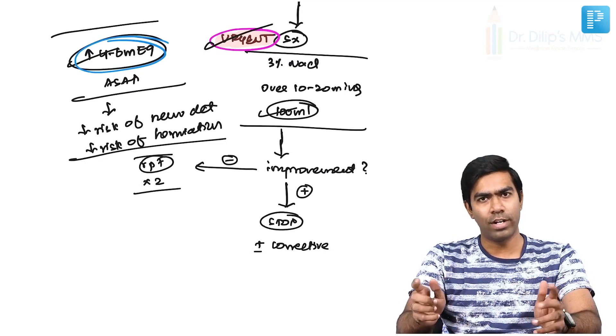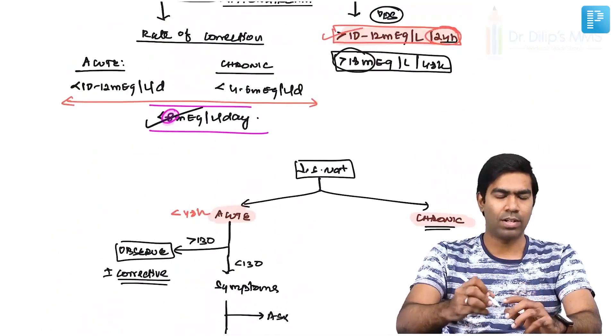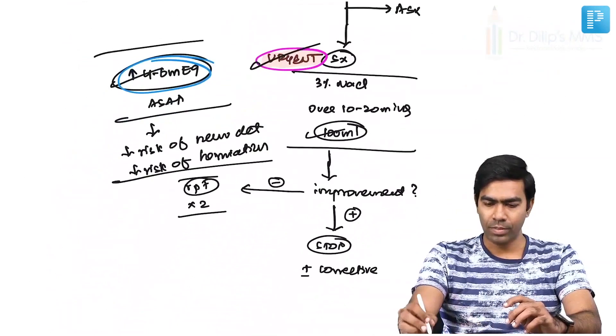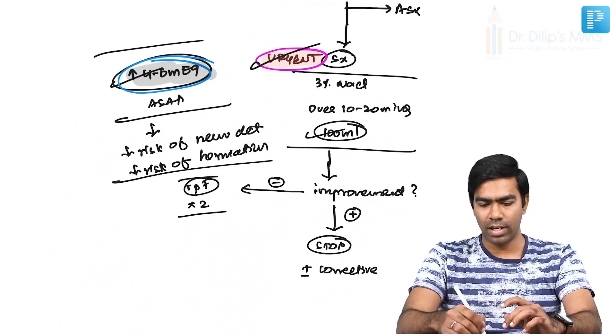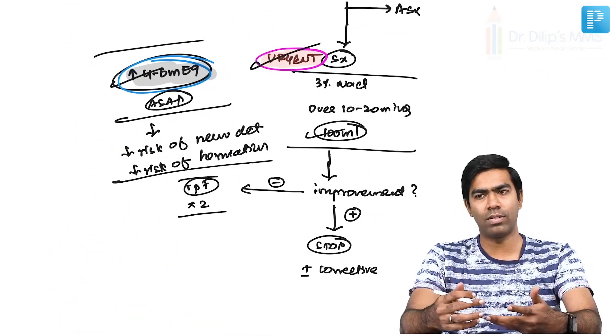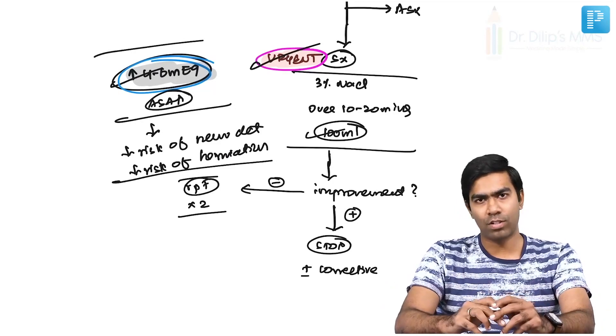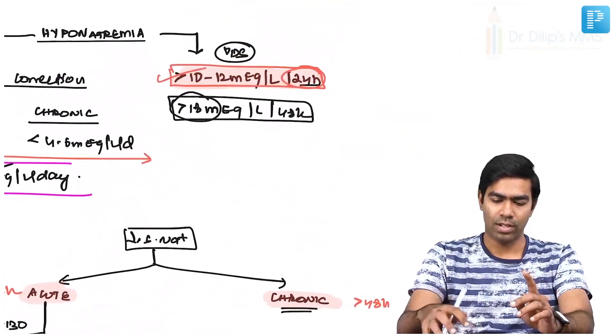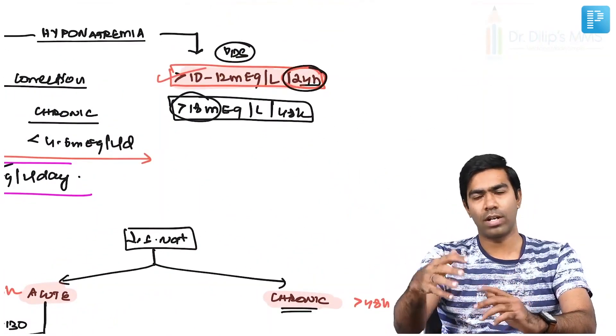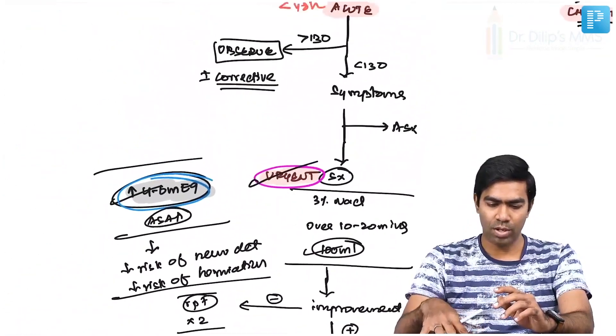You might ask: didn't you say not to exceed 8 mEq/L per day? If I raise sodium by 4 to 6 mEq/L within half an hour or one hour, will I risk osmotic demyelination syndrome (ODS)? Actually, no. The risk of ODS is only when you exceed the cutoff over a 24-hour period — not within half an hour or one hour. So raising 4 to 6 mEq/L acutely is not a problem at all.